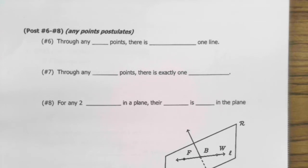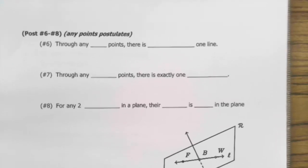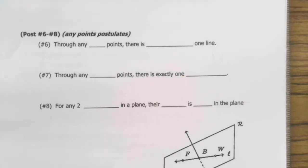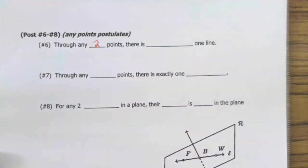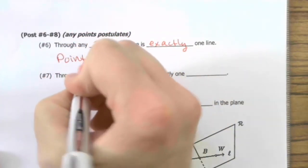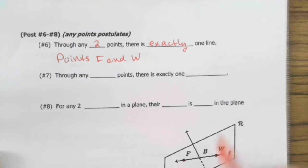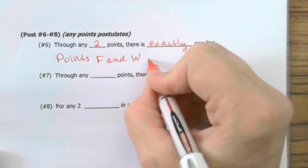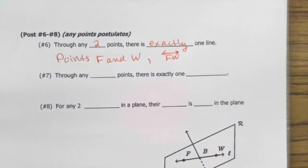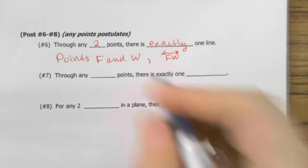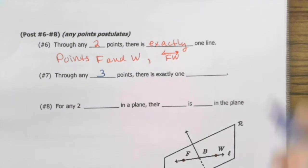All right, this is postulates six, seven, and eight, all three separate. And these are kind of the reverse of the first ones. Six to eight are the any points postulate. Through any two points, there is exactly one line. So in this figure, if we look at points F and W, only one line can contain them, and that is the line F, W. Okay, postulate number seven. Through any three points, there is exactly one plane.